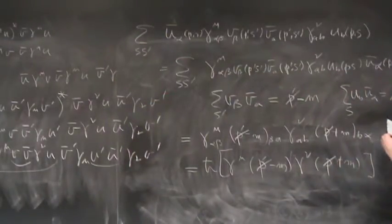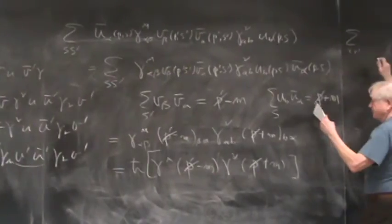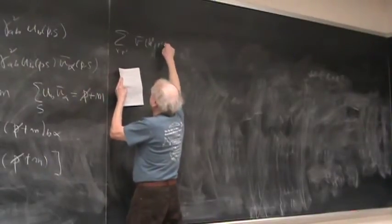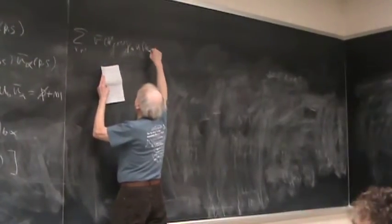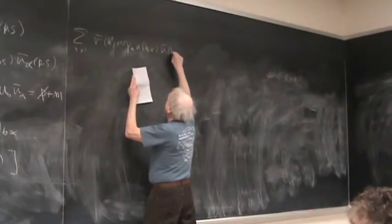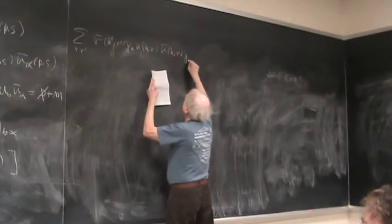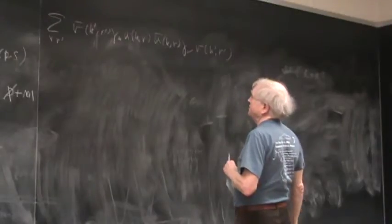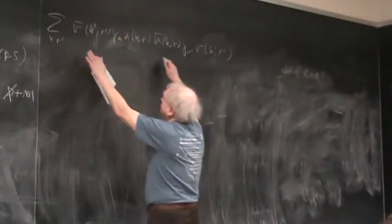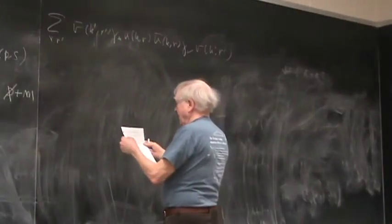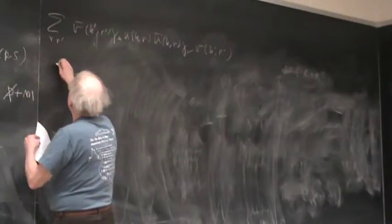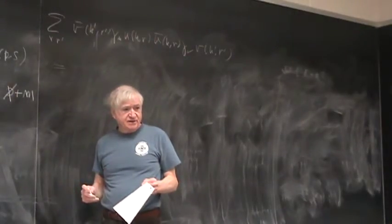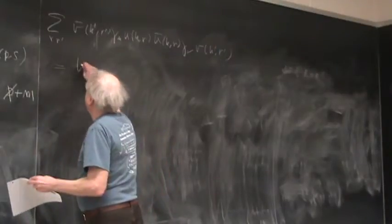Brilliant. I wonder if my notes are correct. Well I'll check. Alright, so let's do the outgoing ones. Now we have a sum of r and r'. And then we have v̄(k', r') γ^μ u(k,r), v̄(k,r) γ^ν v(k', r'). So that's what happens when you take the absolute value squared of this.